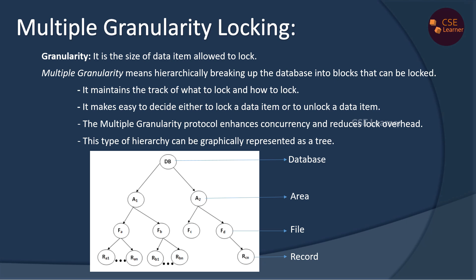If we use a record directly — for example, if we use record R, A1, this record is locked. This is called an Explicit Lock.